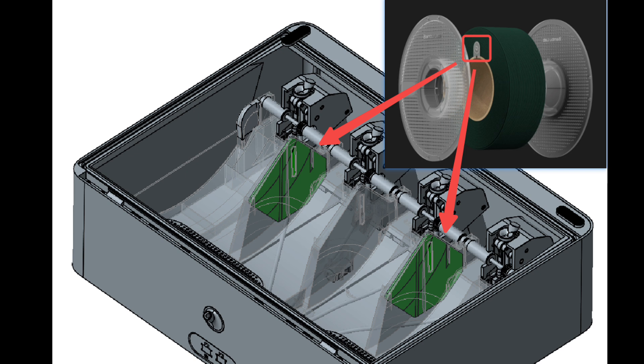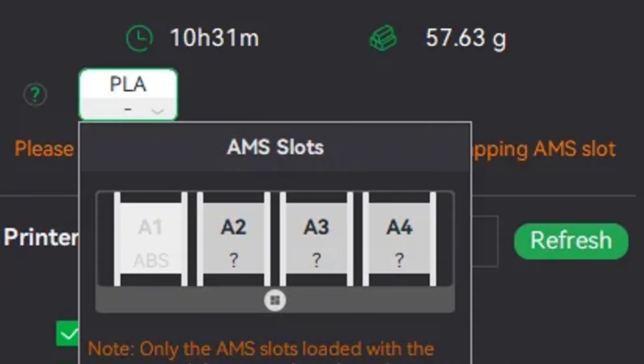And yes, the first-gen AMS is compatible, but it doesn't support drying. For creators who want the best, the new AMS2 Pro is clearly the way to go.